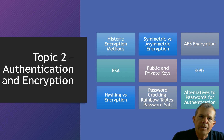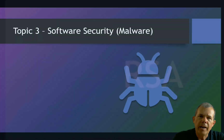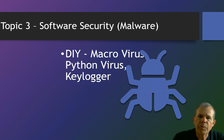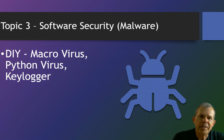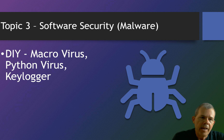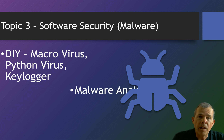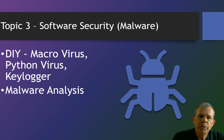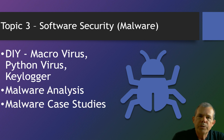We'll talk about alternatives and ways that you can authenticate a user other than a password. That's unit two on authentication and encryption. In unit three, we'll talk about malware or software security, doing some do-it-yourself examples to understand how these things are built. We'll build a macro virus, a Python virus, and then a virus cleaner. We'll build a keylogger using C# so you can see how easy it is to plant malware on an unsuspecting victim. Then we'll do malware analysis and case studies about famous viruses that affected the internet on a large scale.